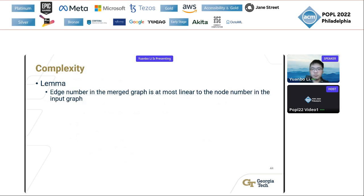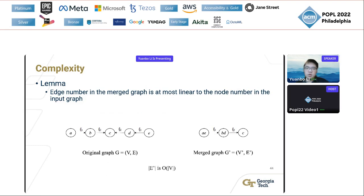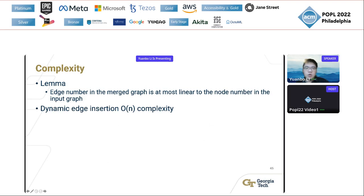For the complexity of the algorithm, we exploit the key relation between the original graph and the merge graph: the number of edges in the merge graph is at most linear in the number of nodes. With this relation, we can show our algorithm has O(N) complexity for dynamic edge insertions and O(N·α(N)) complexity for edge deletions.